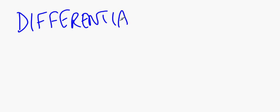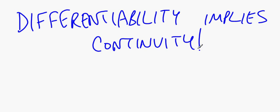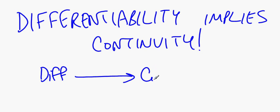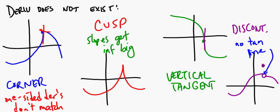Which brings me to this point, and this is a serious point: differentiability implies continuity. That is to say, if you are differentiable, then you are continuous. If you can draw a tangent line to a curve at a point, then the function must be continuous at that point. As a side note, it doesn't necessarily work the other way — you can be continuous without being differentiable, but you cannot be differentiable without being continuous.